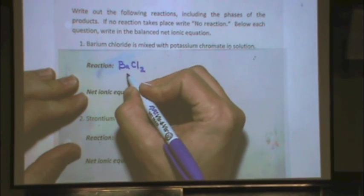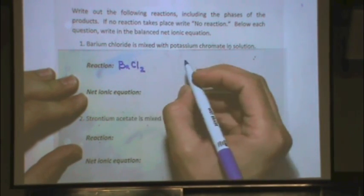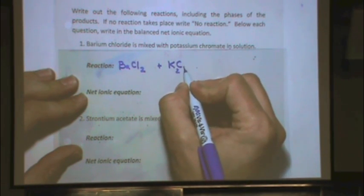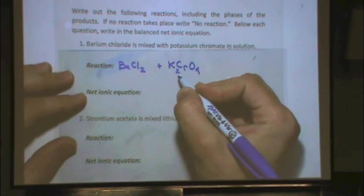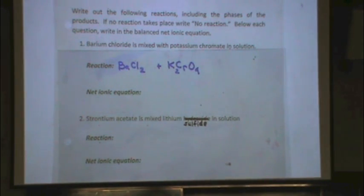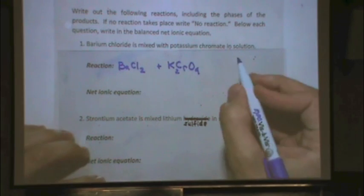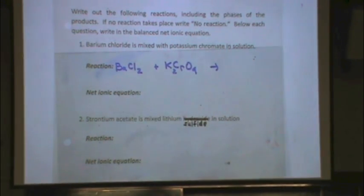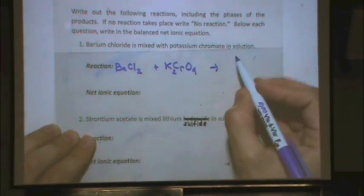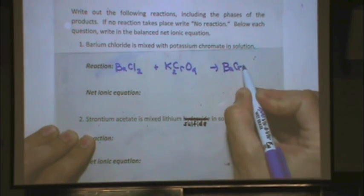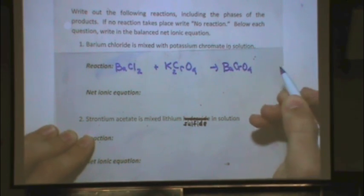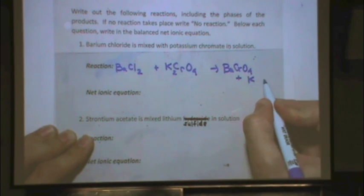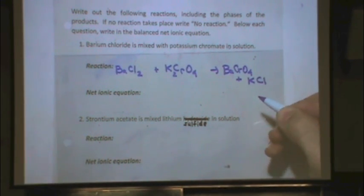BaCl₂: barium is plus 2, chloride is minus 2. This is mixed with potassium chromate, K₂CrO₄. Potassium is plus 1, chromate is minus 2, so I need 2 potassiums. This is a double replacement, so barium goes with chromate — barium chromate: barium plus 2, chromate minus 2. And potassium chloride: potassium plus 1, chlorine minus 1.